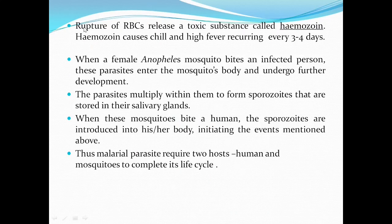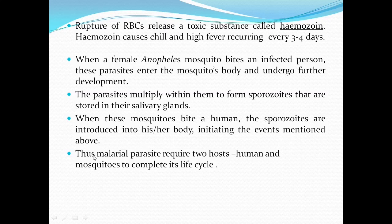Rupture of RBCs releases a toxic substance called haemozoin. This haemozoin causes chills and high fever recurring every three to four days. When a female Anopheles mosquito bites an infected person, these parasites enter the mosquito's body and undergo further development. The parasites multiply within the mosquito to form sporozoites that are stored in their salivary glands. When these mosquitoes bite a human, the sporozoites are introduced into the body, initiating the events mentioned above. Thus, malarial parasites require two hosts — human and mosquito — to complete their life cycle.